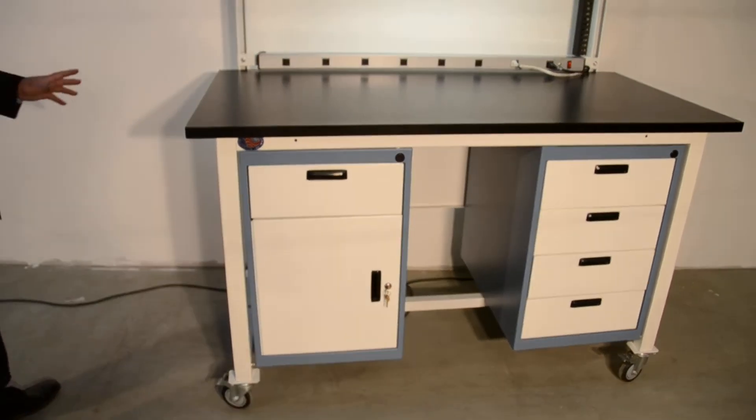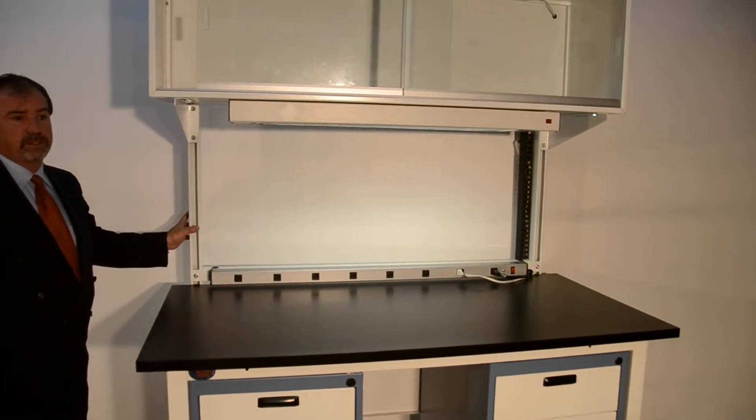Above the work surface, we have our heavy-duty upright. This is twice as thick as our standard upright. It's three and a quarter inches versus one and five-eighths.